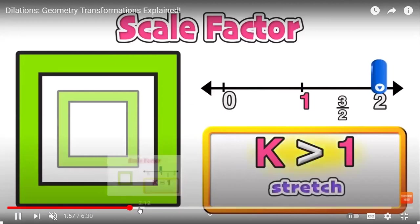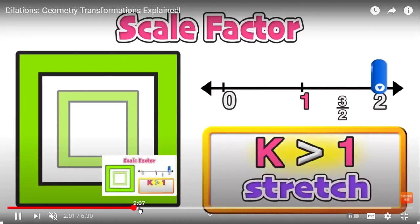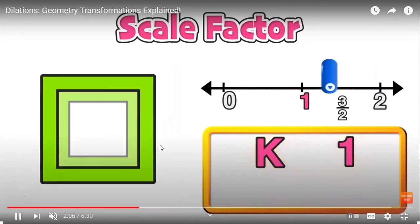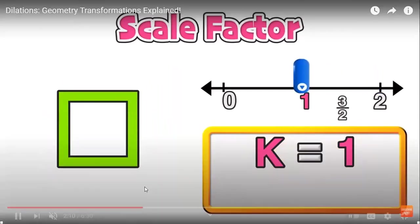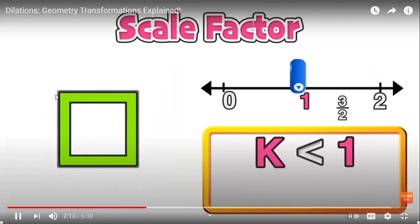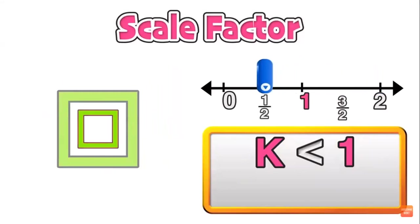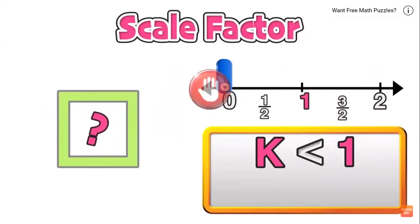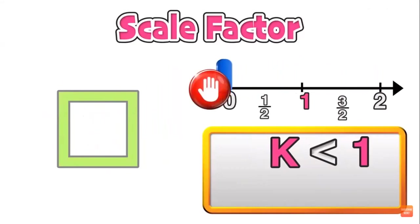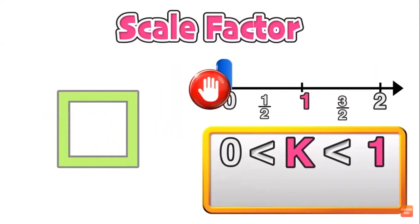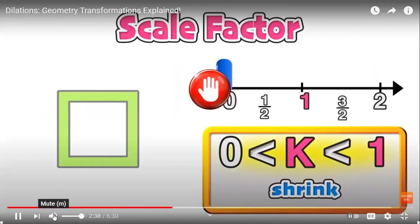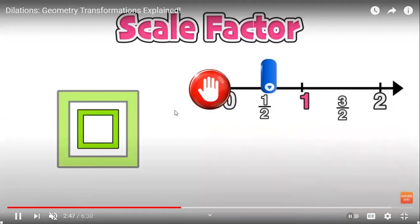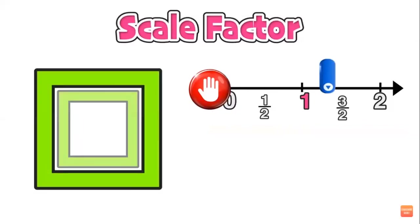If k is greater than 1, the figure will stretch. If the scale factor k is less than 1, we are making the image smaller — in this case half as large as the original. We can continue to shrink the figure down in size until we reach 0. A scale factor k that is greater than 0 but less than 1 will represent a shrink. If the scale factor is exactly 1, the two figures are congruent.